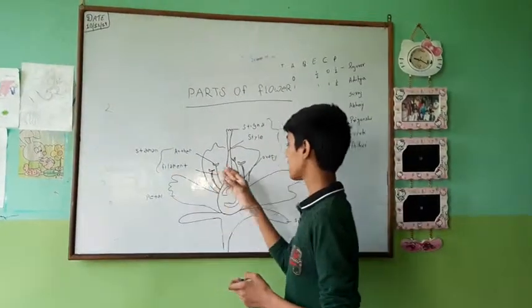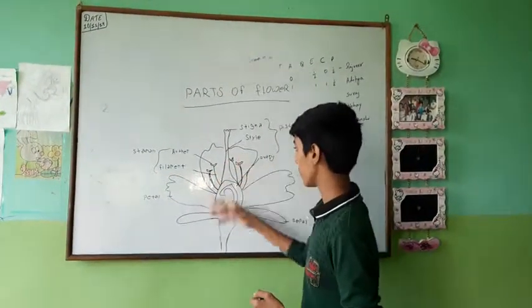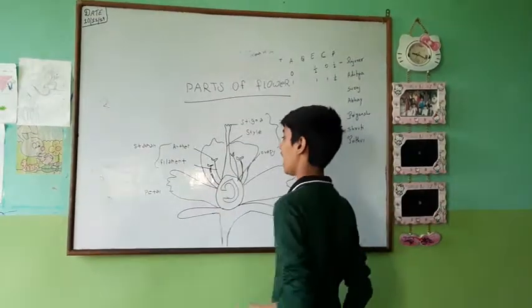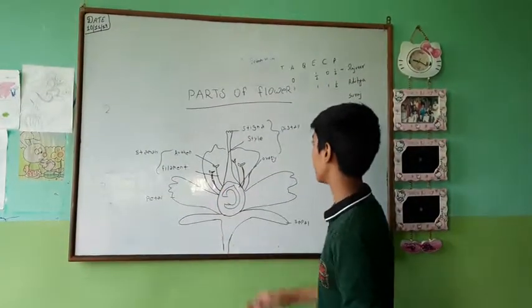Stamen. It is mainly a protective part, and it produces pollen grains.